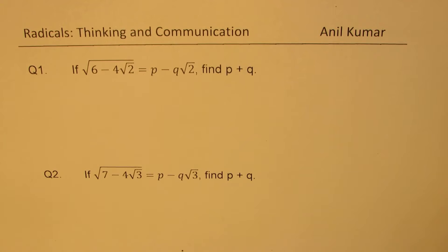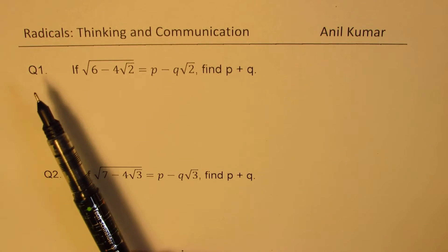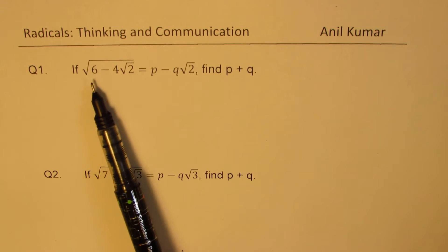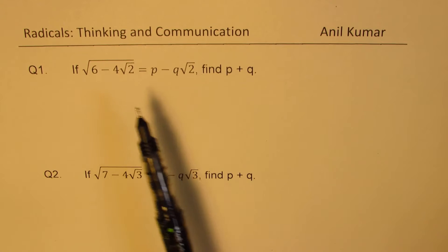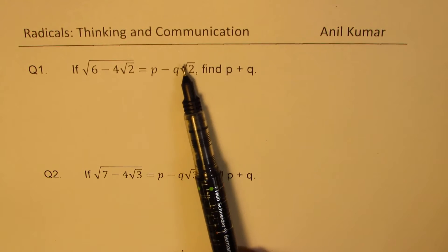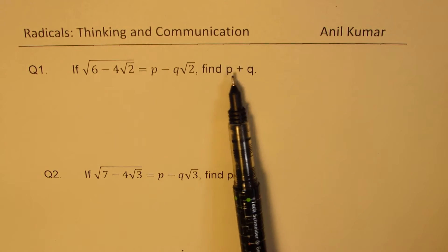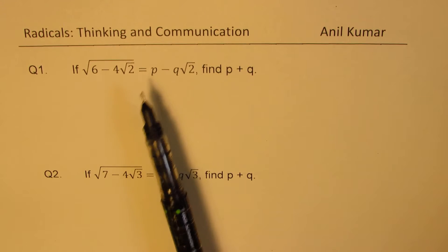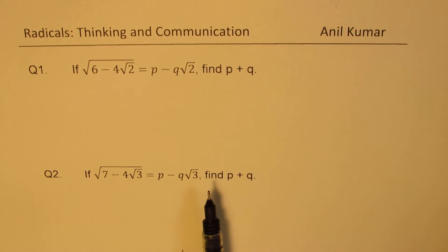Here are two based on radicals. Question number one is, if square root of 6 minus 4 square root of 2 is equal to p minus q square root of 2, find the value of p plus q. Very similar to this for you to practice is another question where I've changed the values to square root of 7 minus 4 square root 3.